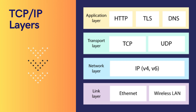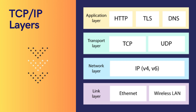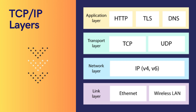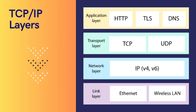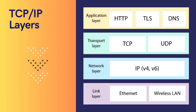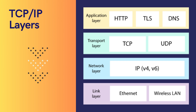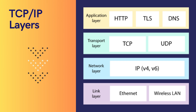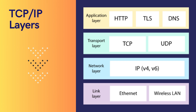TCP/IP is a four-layer protocol. The layers are: the application layer, transport layer, network layer, and link layer.